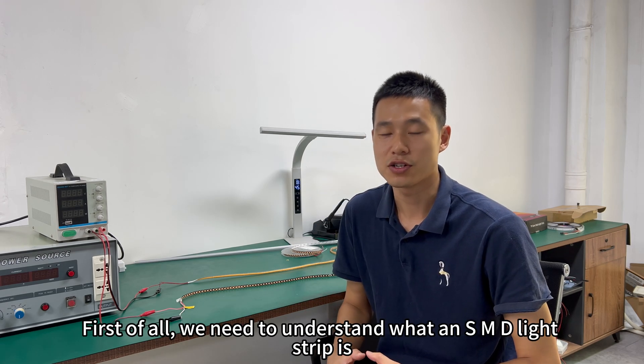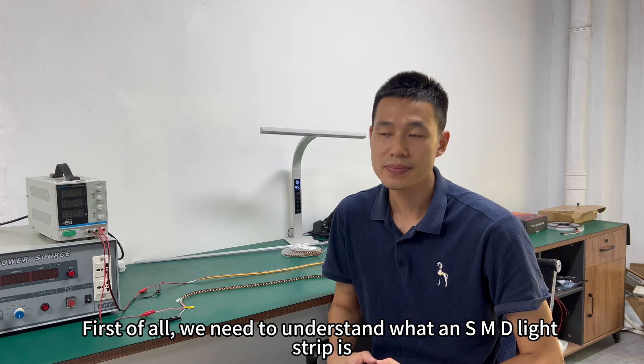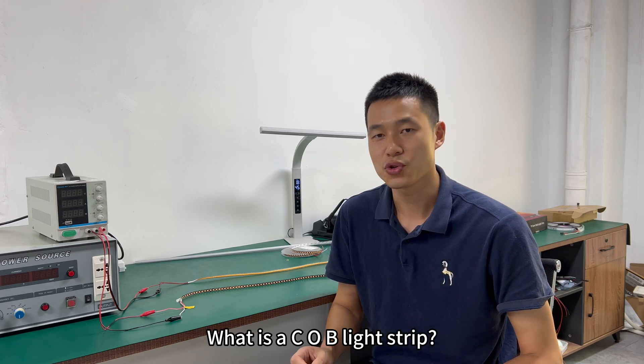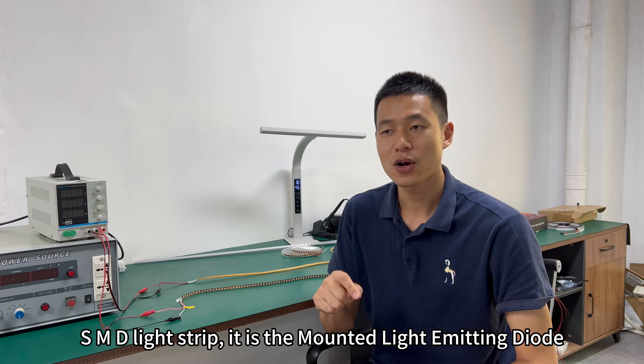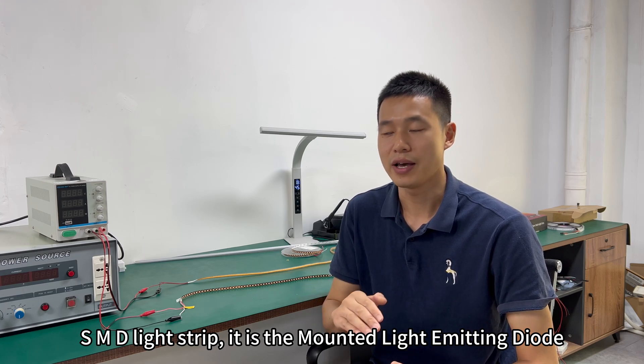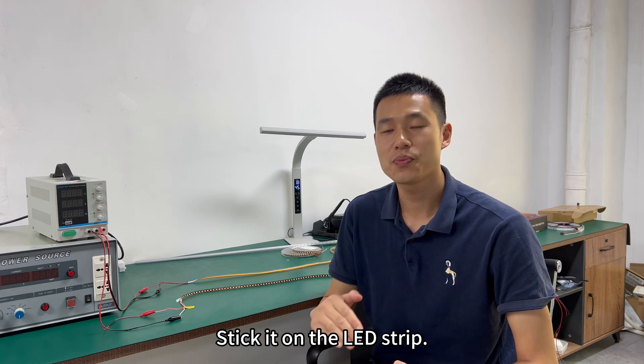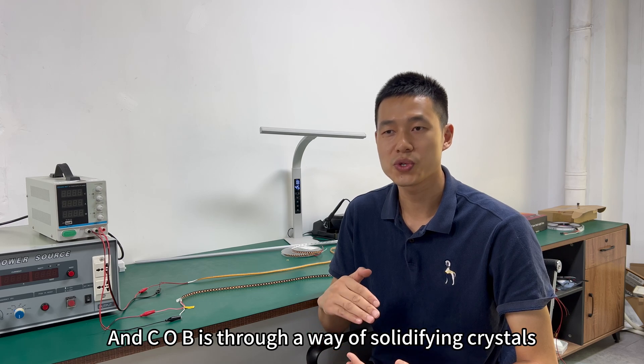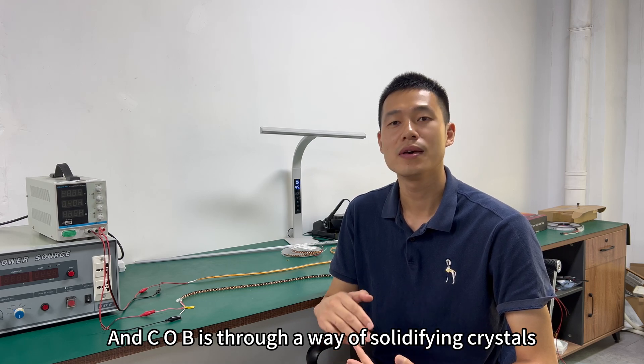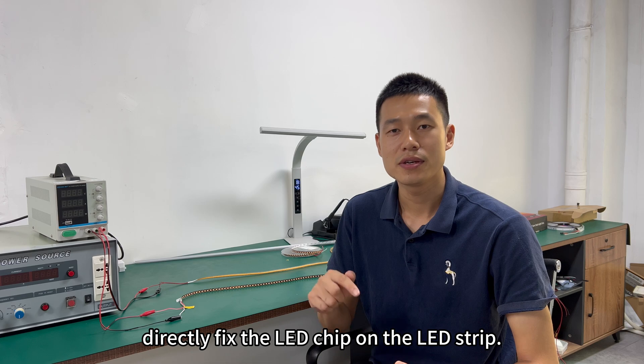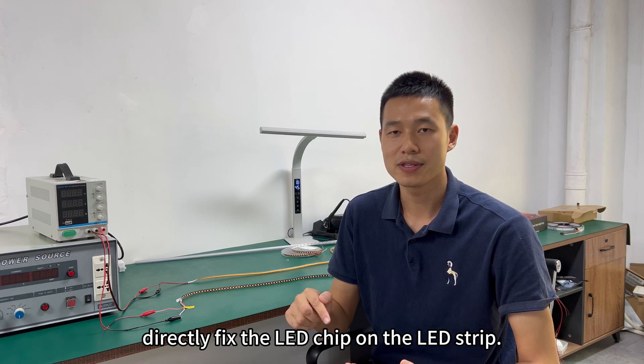First of all, we need to understand what an SMD light strip is and what is a COB light strip. SMD light strip is the mounted light emitting diode stuck on the LED strip. And COB is through a way of solidifying crystals, directly fixing the LED chip on the LED strip.